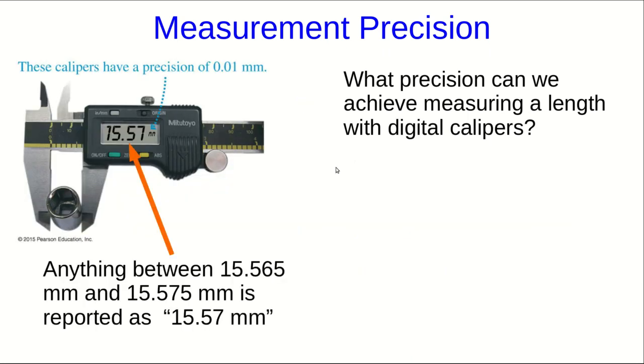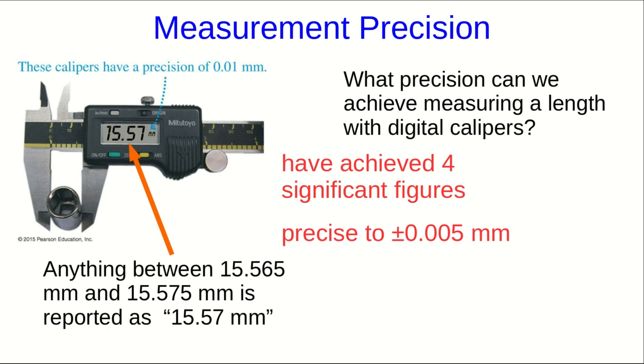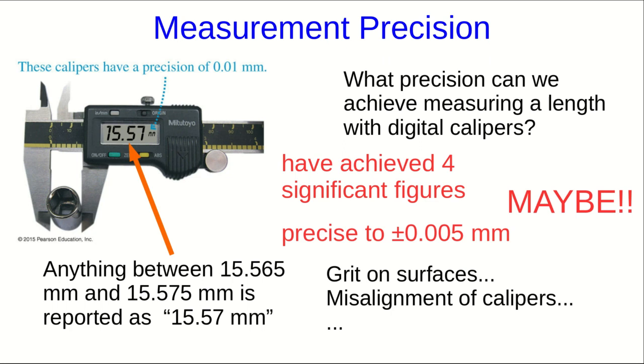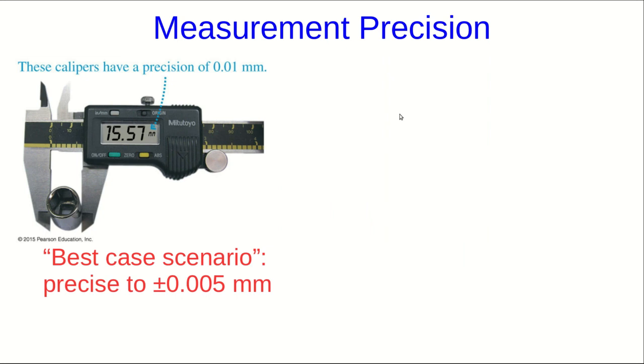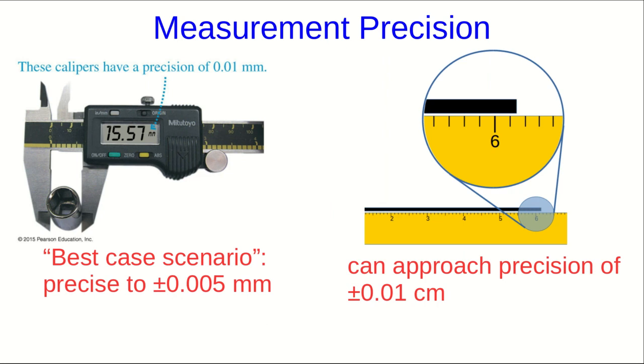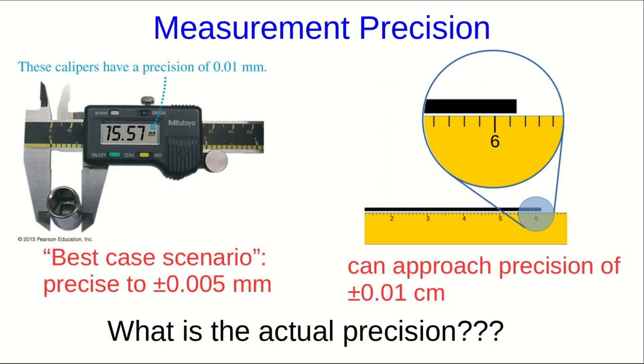What about digital calipers? They report a value. In this case, anything between 0.565 and 0.575 would have been reported as 0.57. And there's no scale we can look at more closely, so that's the best we can do. So we've got four significant figures, or plus or minus 0.005 millimeters. Maybe, because there are other factors. The surfaces could have grit on them, the calipers might not have been well aligned. And so in fact, that 0.005 millimeters is a best case scenario. And now I hope you're getting worried, because I'm using a lot of weasel words like best case scenario, or the precision can approach a certain value. And you ought to be wondering, what's the actual precision? The quick answer is that one measurement doesn't tell us the actual precision. The longer answer is that lecture three is going to be all about how we use the statistics on a set of measurements to estimate the precision.